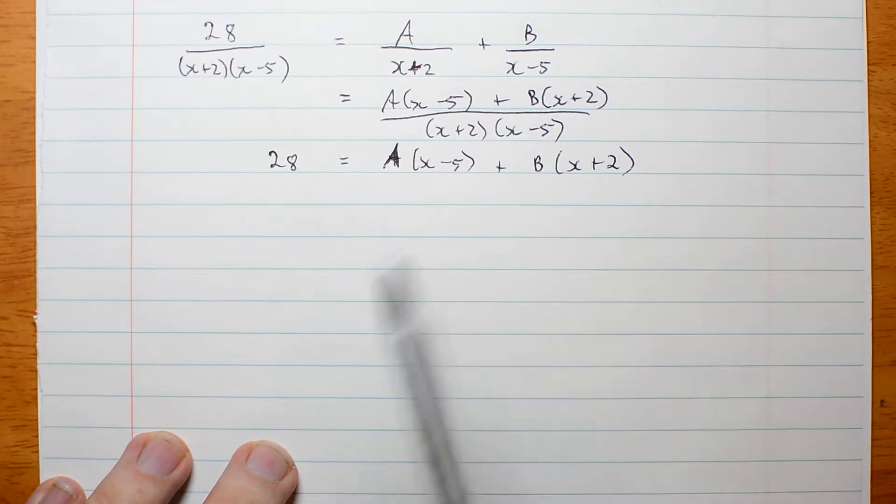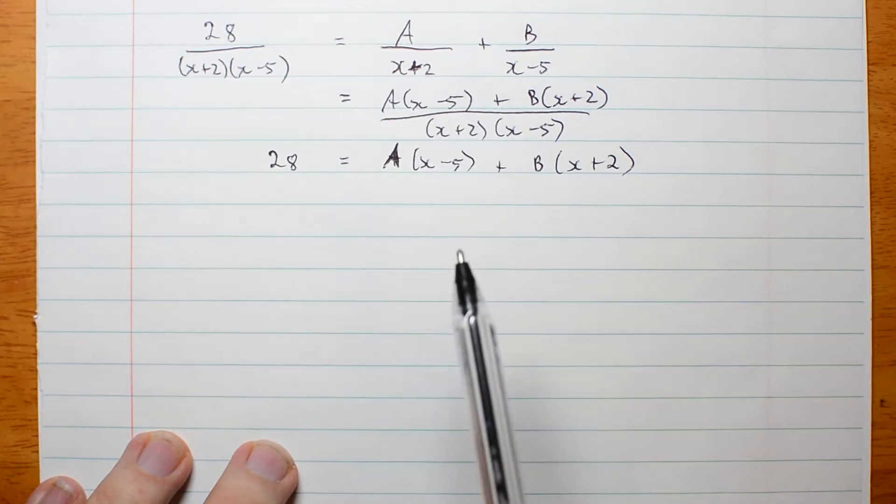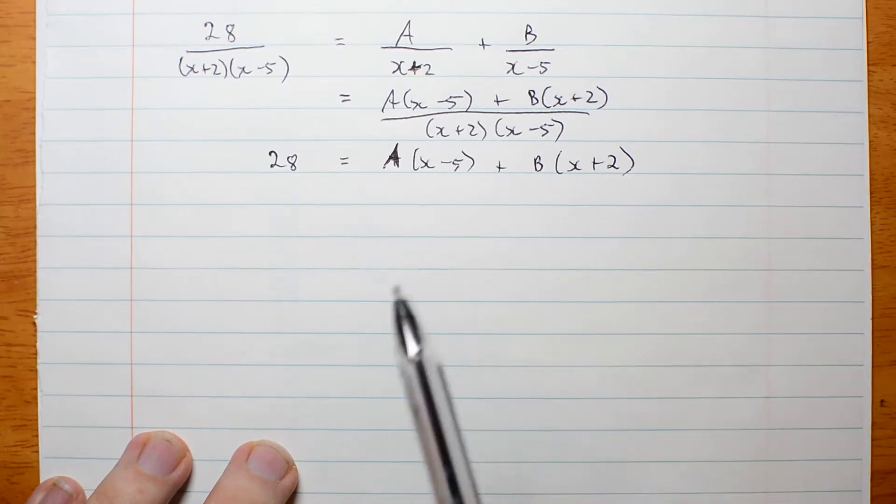Now, as we saw in the previous video, it's possible to expand brackets, collect like terms, equate coefficients. But there is a quicker way. The quicker way is using the null factor law.